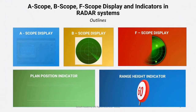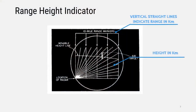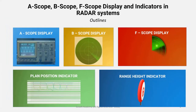This is the range height indicator. In a certain region, we have vertical lines and horizontal lines. The vertical lines show how much range is in the distance — for example, each line is 5 km, covering a total range of 25 km. The horizontal lines indicate height. Where the range lines and height lines intersect, we can identify the exact height and range of a target. This allows us to identify the range characteristics of targets at various distances and heights.